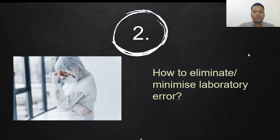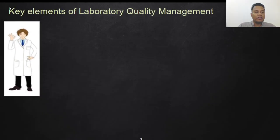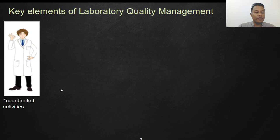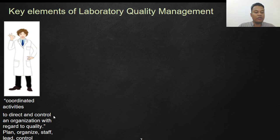The second concern is how to eliminate — or best to minimize — lab error. Let's look at the key elements of lab quality management. Quality management is to direct and coordinate activities to control an organization with regard to quality. It consists of planning, organizing, getting the right staff, leading, and controlling the activities.